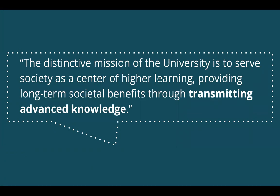Why is the University of California concerned about making research more openly available? One fundamental reason is that the research and teaching mission of the UC includes the aim of transmitting advanced knowledge. Our faculty, researchers, and students are creating and being asked to share their scholarship more openly. This system of scholarly publishing includes traditional journal publications, scholarly chapters and monographs, conference proceedings, digital projects, datasets, working papers, and other materials.